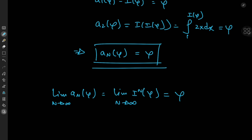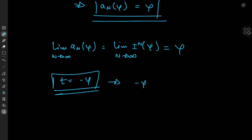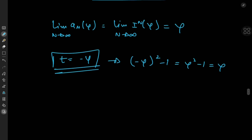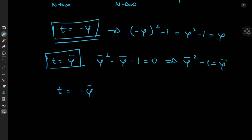Immediately we notice another fixed point: t equal to negative phi, because that gives us negative phi squared minus 1, which is the same as phi squared minus 1, which equals phi. So we get the fixed point phi again. Now what about t equals phi bar? Phi bar also satisfies phi bar squared minus phi bar minus 1 equals 0, implying that phi bar squared minus 1 equals phi bar. So phi bar is another fixed point. And t equal to negative phi bar would give negative phi bar squared minus 1, which is phi bar squared minus 1, which is phi bar again.